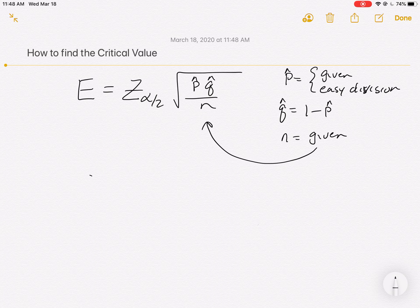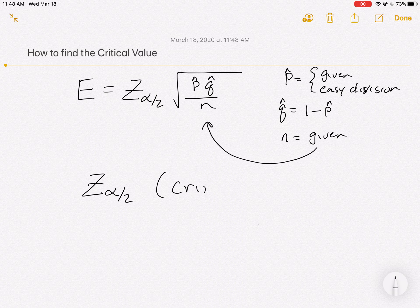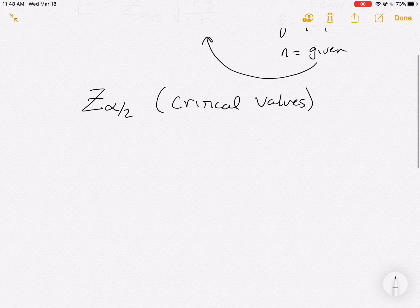So the question is, how do we find this z alpha over 2? That's one notation for a single value that goes in, and the notation is actually trying to tell us how to find it. They commonly refer to this as a critical value. So if you hear the book ask for critical values, they're the z values for that first section.